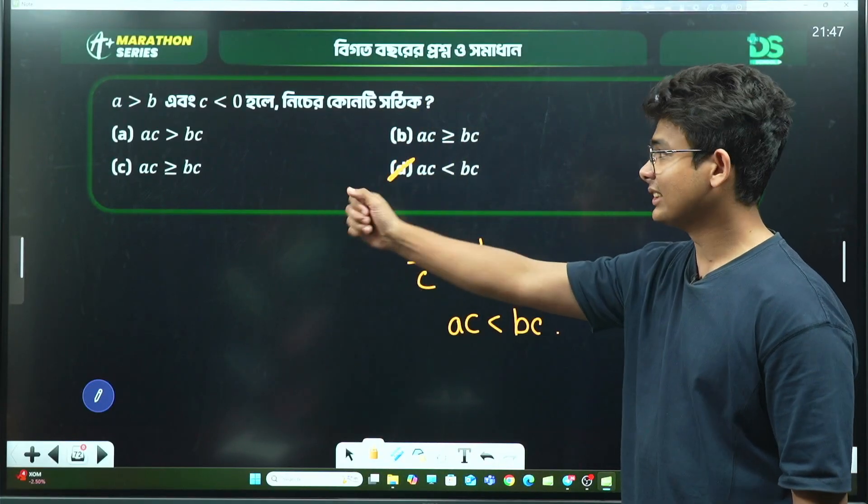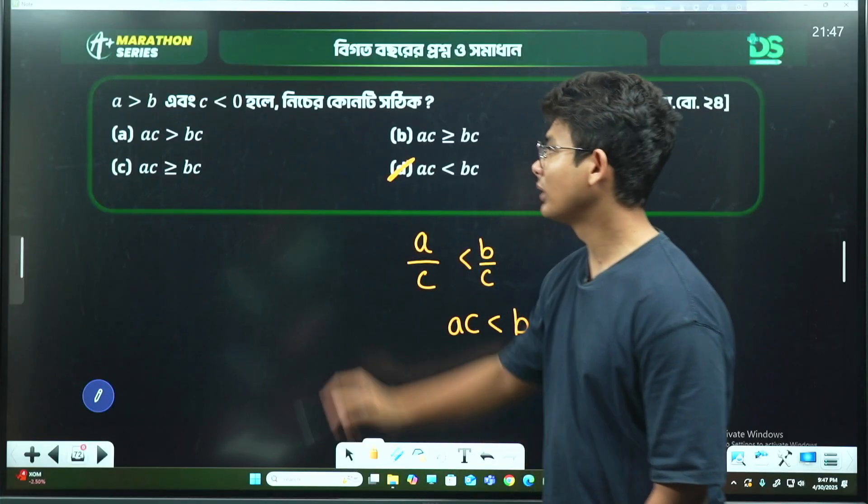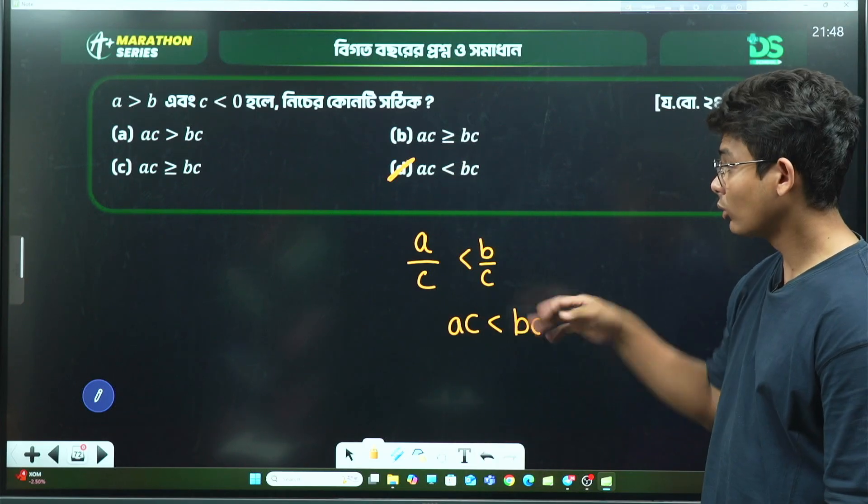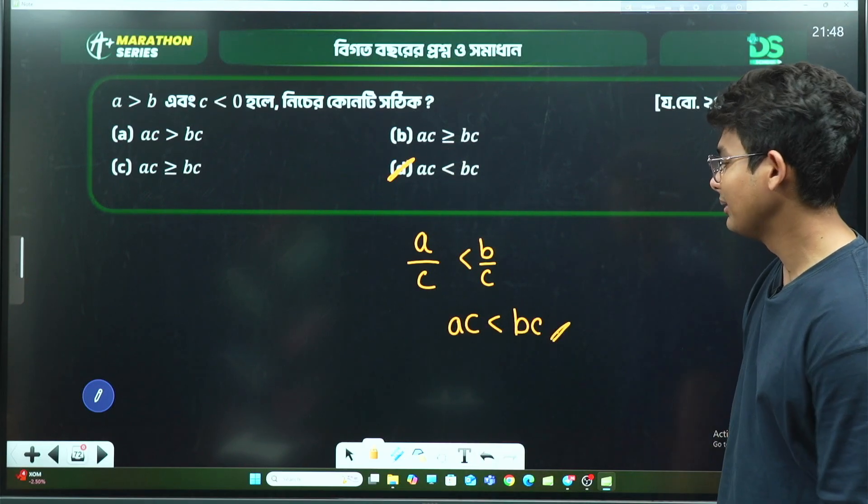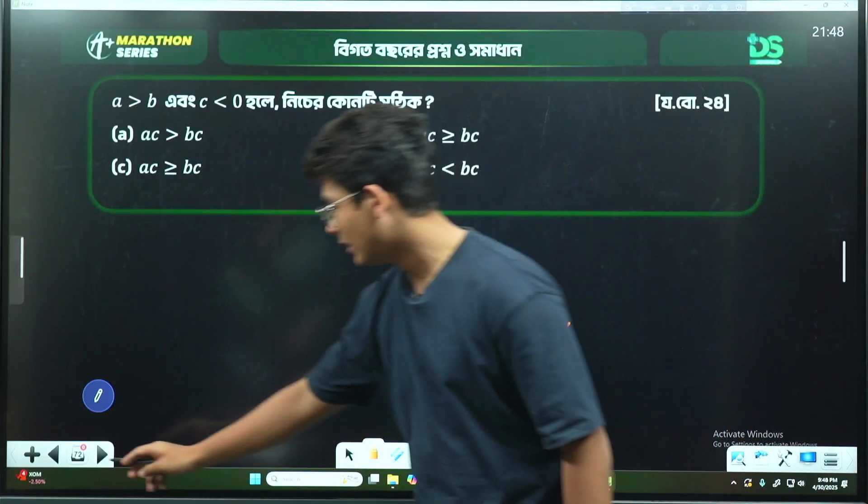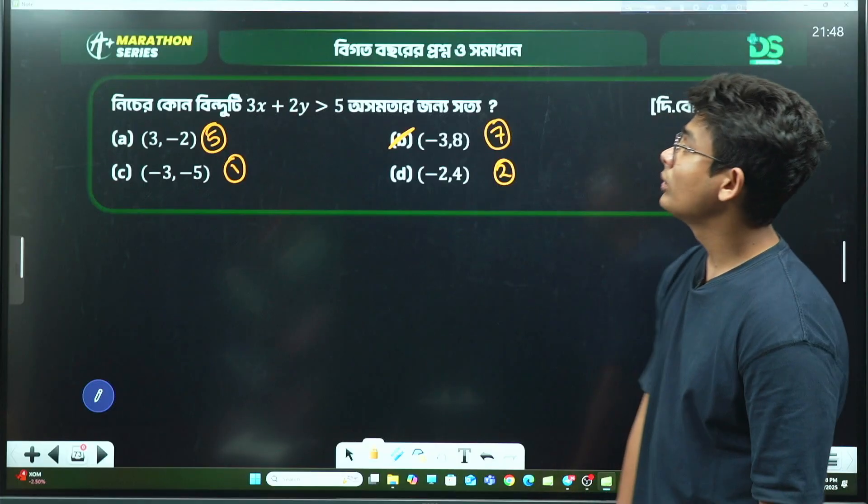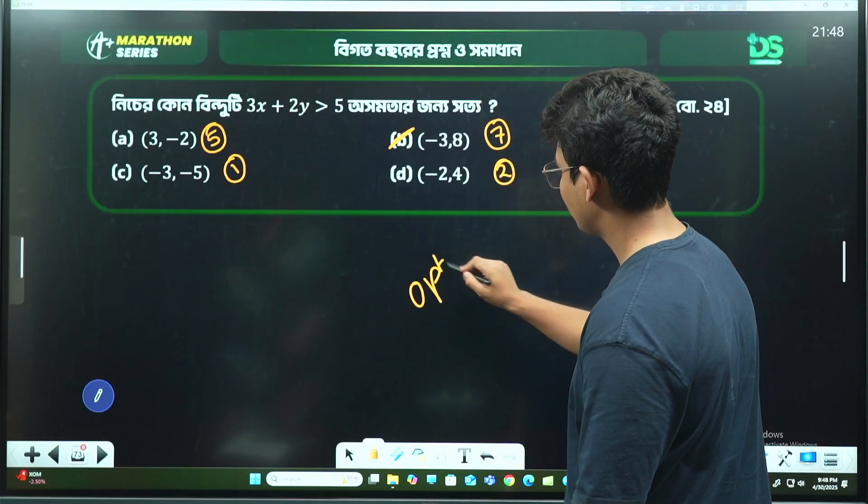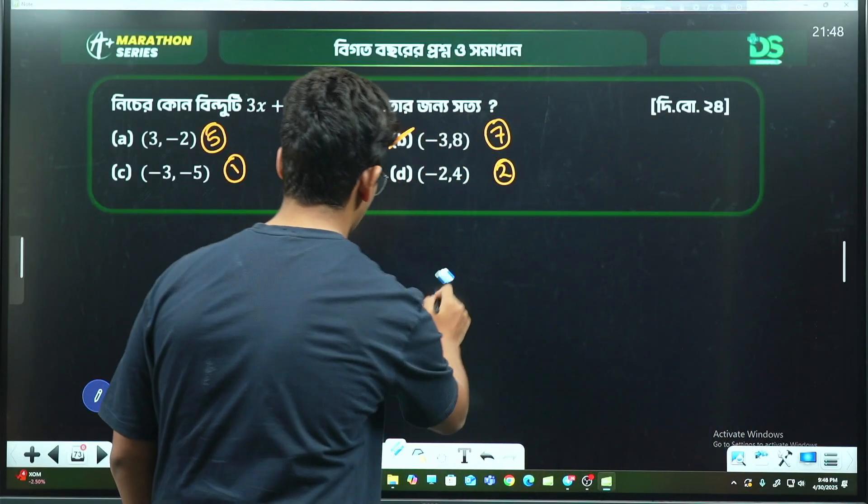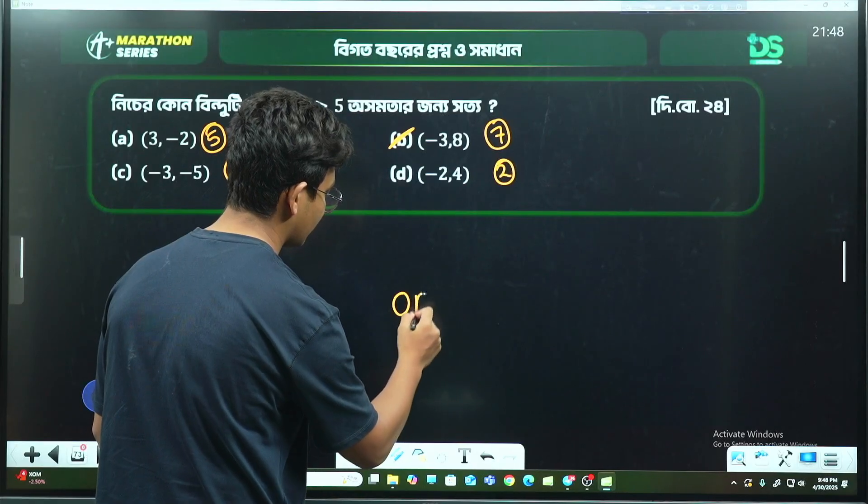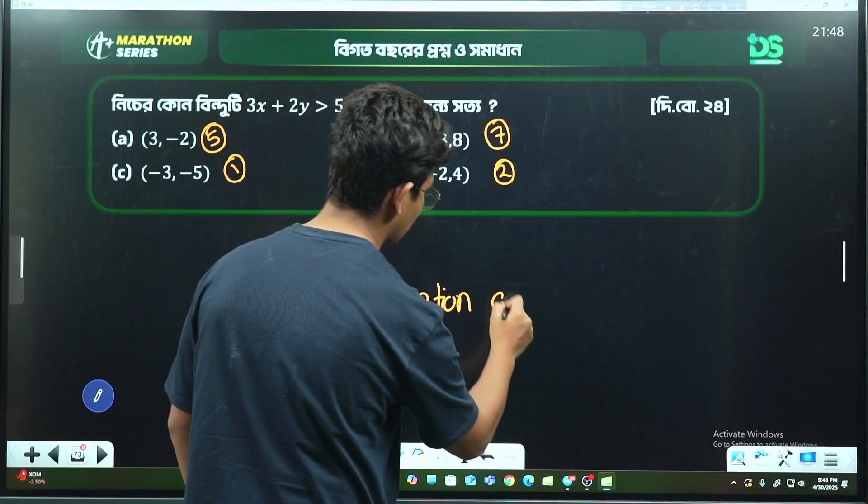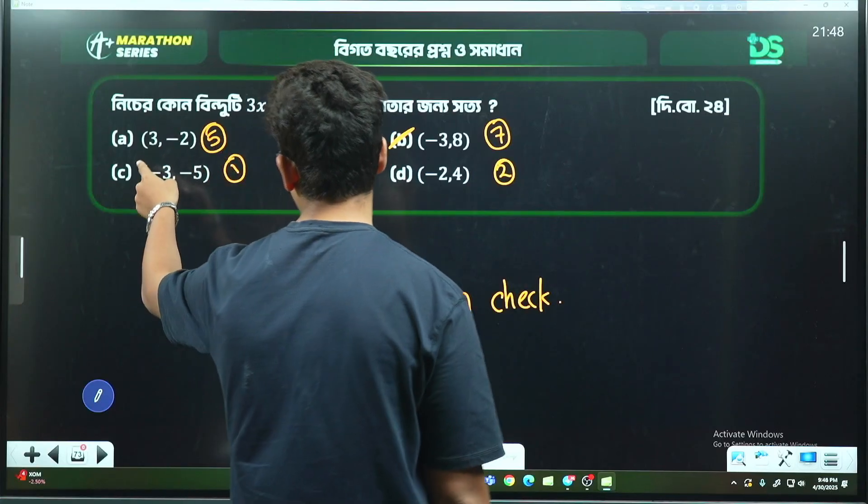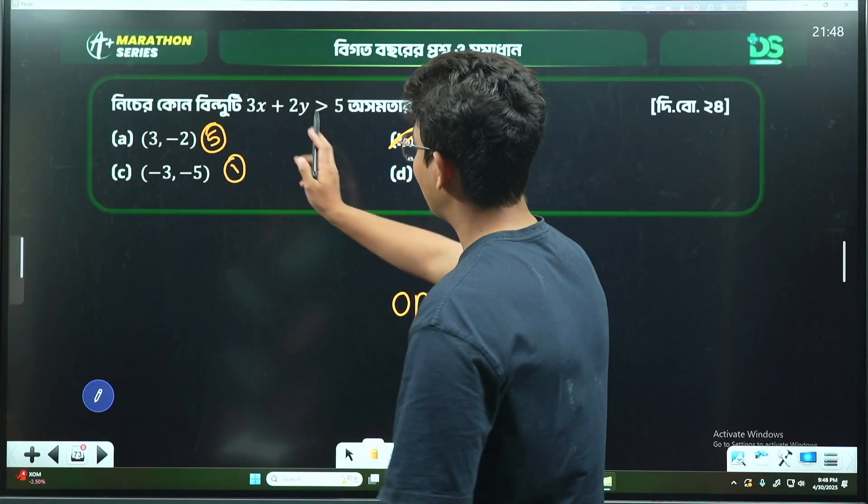Here's a question: if a > b and c < 0, what can we conclude? Option (a): a > bc? Option (b): ac ≤ bc? Option (c): ac ≥ bc? Since c is negative, when we multiply both sides by c, the inequality reverses.